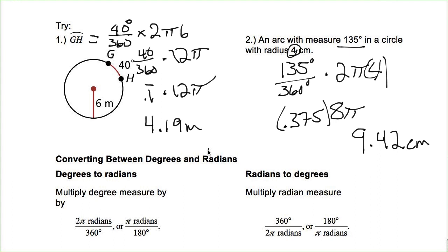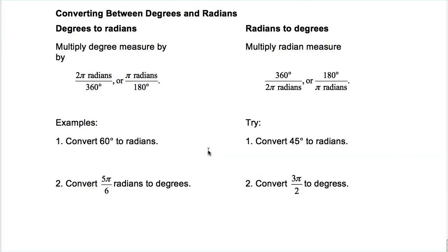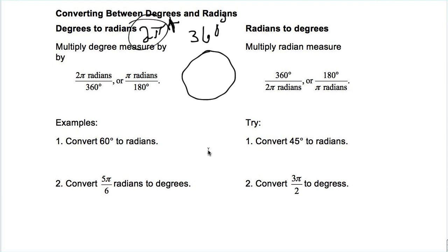Let's look at radians. Normally we deal with degrees, but now we'll learn how to convert to radians. If 360 degrees is all the way around the circle, the circumference equation is 2πr, and if the radius is 1, it's just 2π all the way around. Hence 2π radians equals 360 degrees. To go from degrees to radians, multiply your degree measure by either 2π/360 or π/180 — same answer either way.